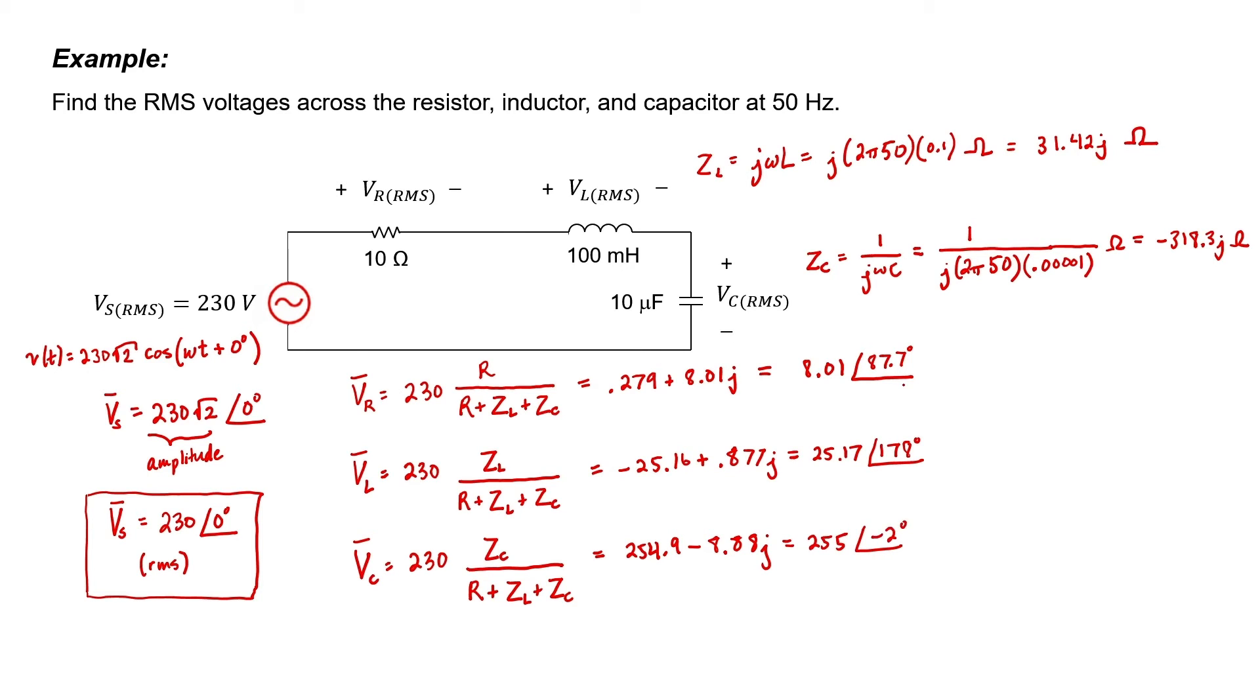I know that the voltage across the resistor has a phase difference from the source of 87.7 degrees, but I have no phase reference to the source to start with. I'm only interested in the RMS voltage in this problem. Let's just drop the phase.